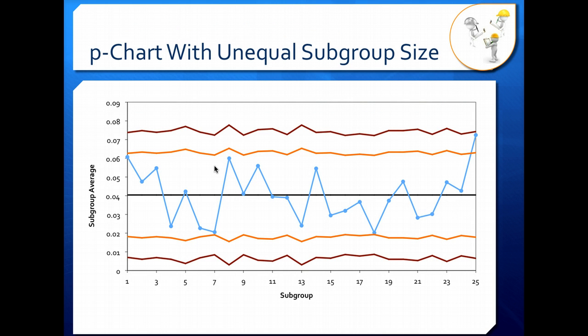Your finished p-chart with unequal subgroup size is going to look something like this. Notice that our process average, our central line, is nice and straight. That stays the same regardless of what else happens.